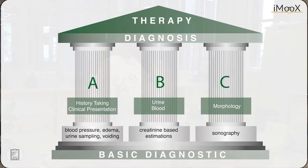Chronic care management of older patients with chronic kidney disease is built on three huge columns. The first one is clinical history taking, to know about the individual targets and goals of your patients. Secondly, clinical evaluation, such as checking for blood pressure, edema, voiding, and urine volume, is important to know about the status of your patient. Finally, regular laboratory monitoring is essential in the chronic care management.